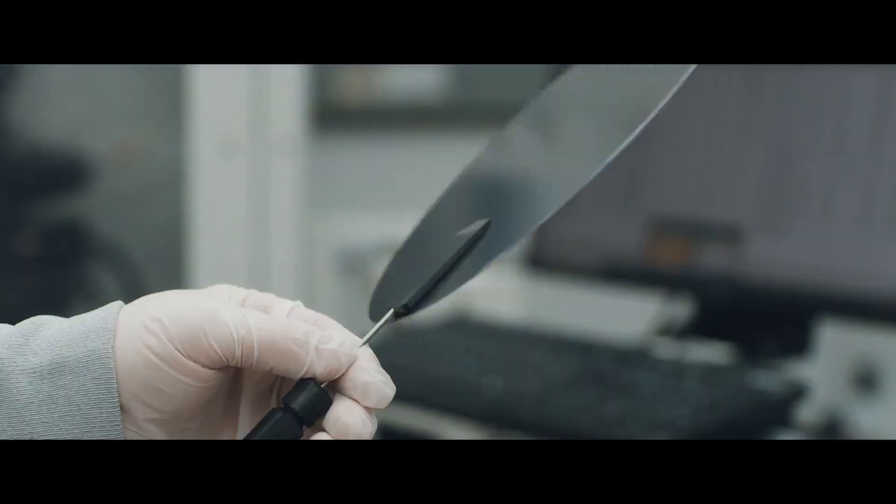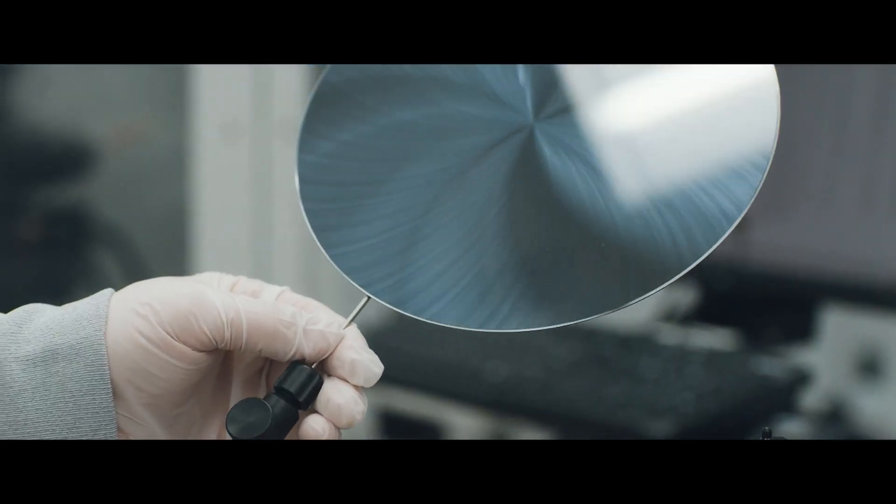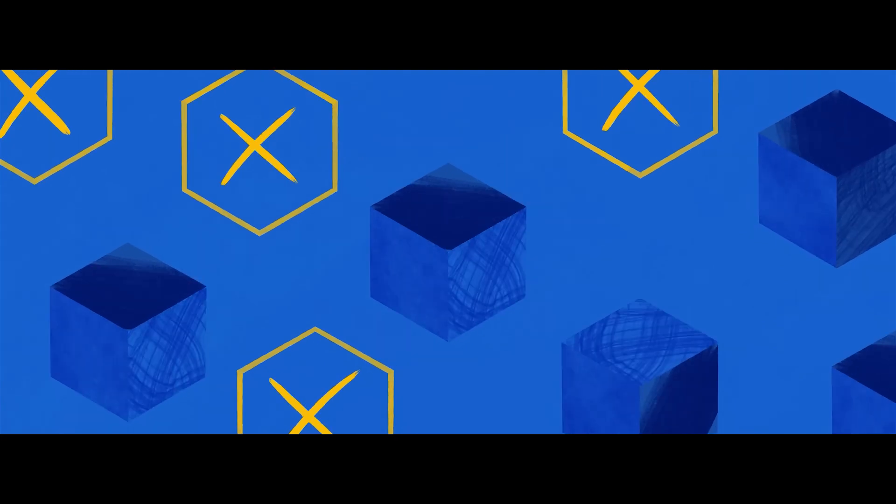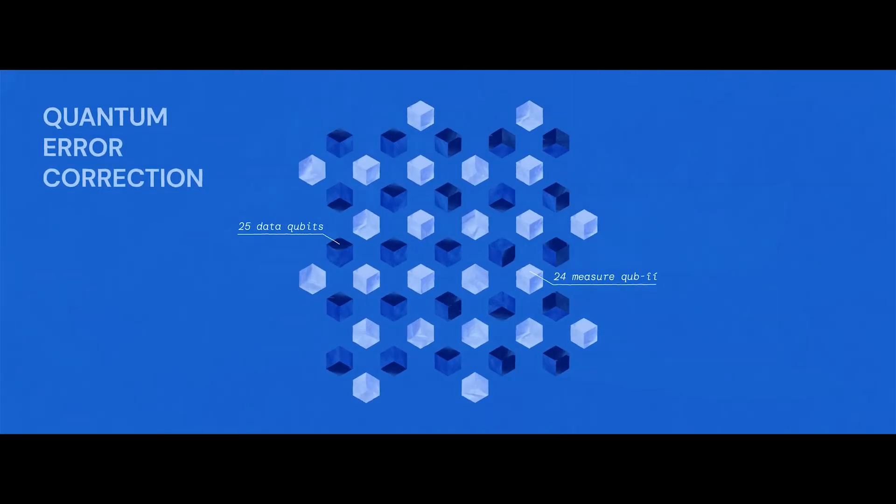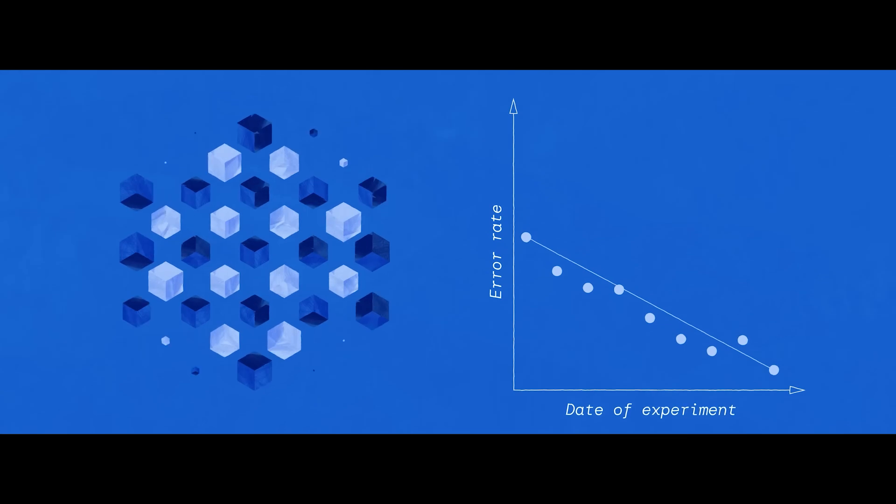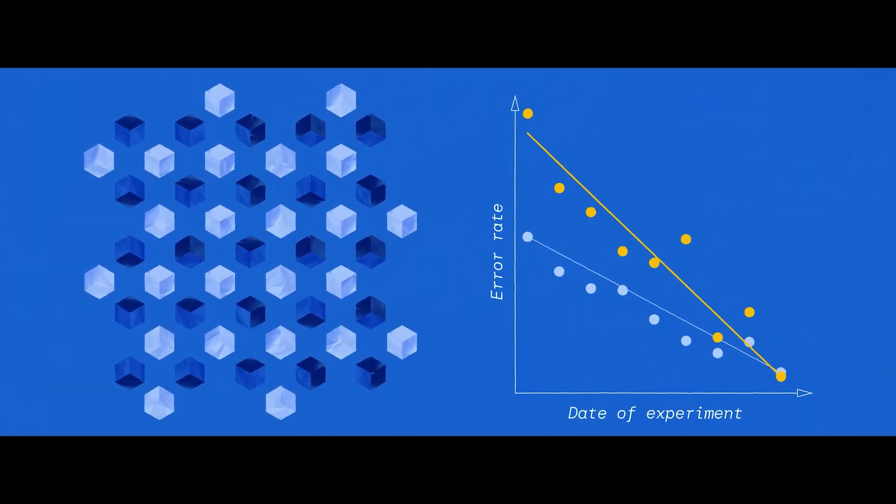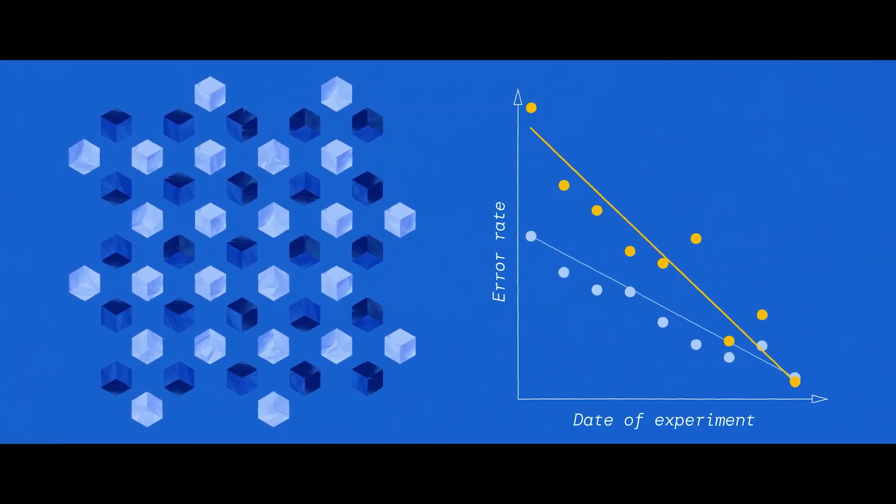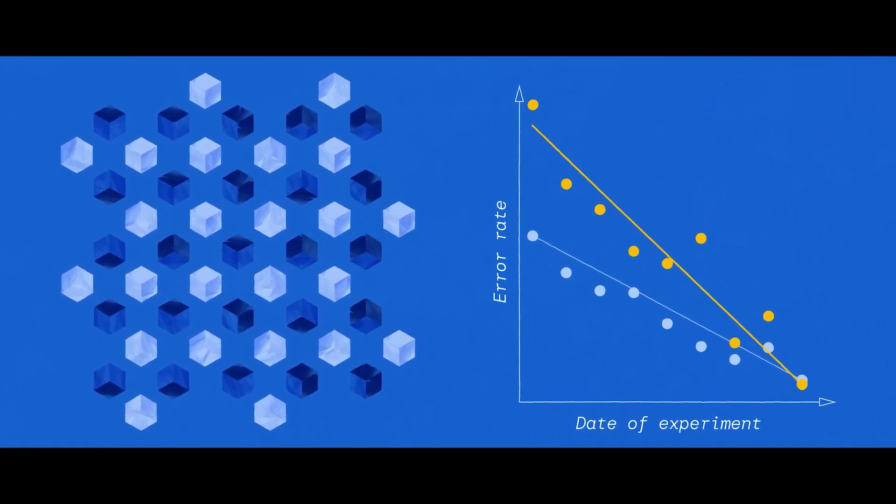This is quantum error correction. Quantum error correction is a series of techniques that basically boil down to us, as physicists, knowing something about what causes qubits to decohere or lose information to the environment. By combining multiple individual physical qubits into a single, more robust, logical qubit, physicists have been able to demonstrate that both theoretically and experimentally, computation fidelity can be improved.